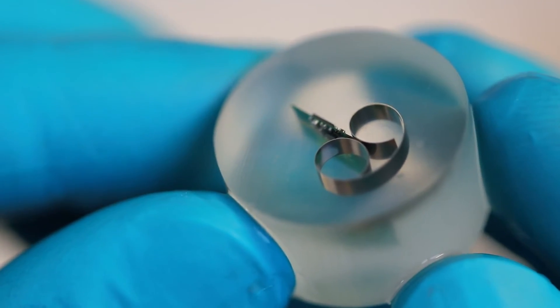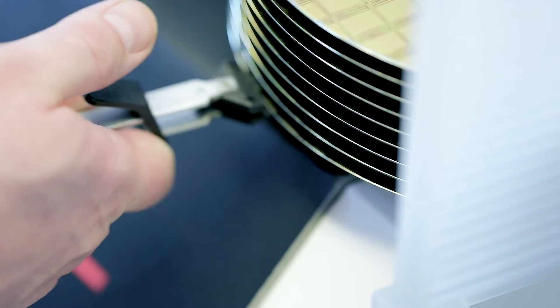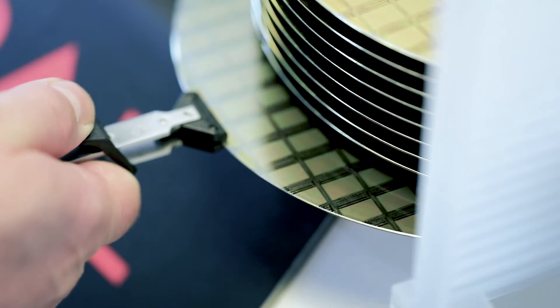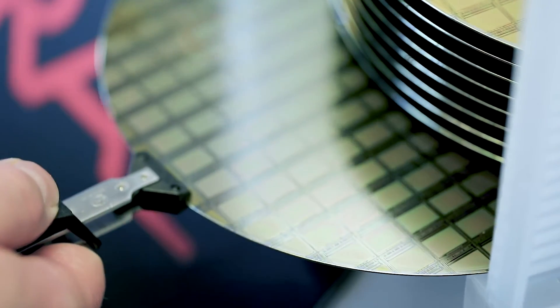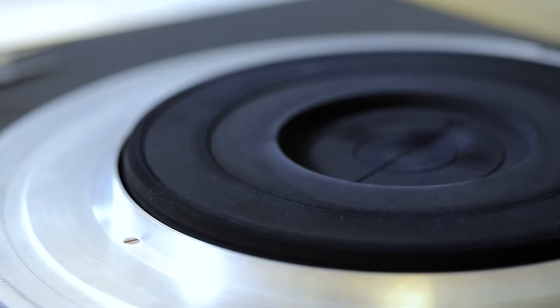Yet another method is the de-layering of a device. We use reactive ion etching combined with wet chemical etching to remove layer after layer.